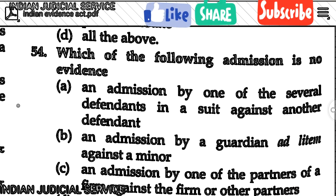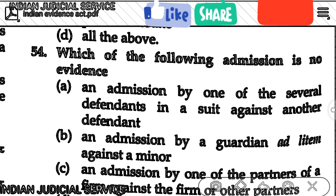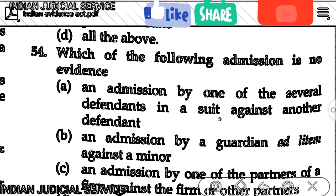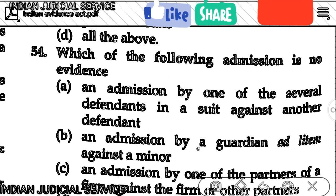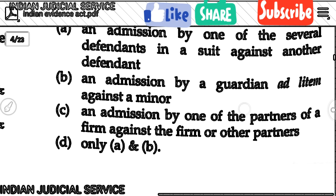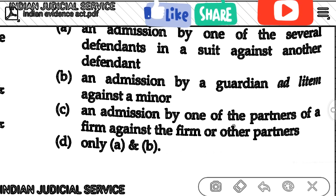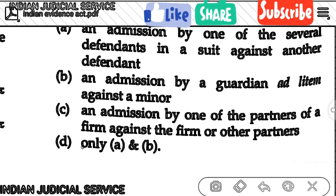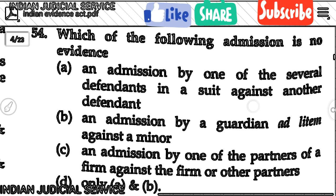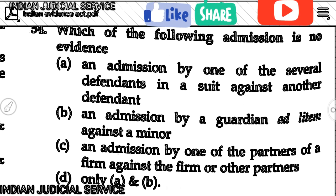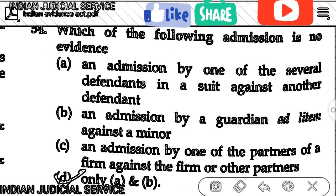Question number 54: Which of the following admissions is no evidence? Admission by one of several defendants against another defendant, and admission by a guardian ad litem against a minor. The answer is option D — only A and B. These are not considered valid admissions.